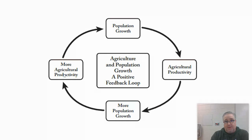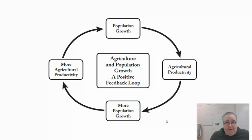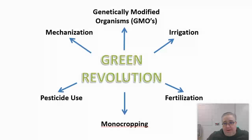These two things are positively impacting each other: population growth drives agriculture, and agriculture drives population growth. In AP Environmental Science, one of the big things we have to look at is not so much slowing down food production, but looking at the impact that all of these agricultural processes take on our planet.